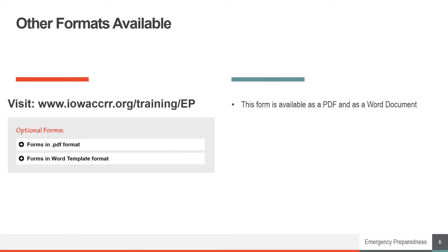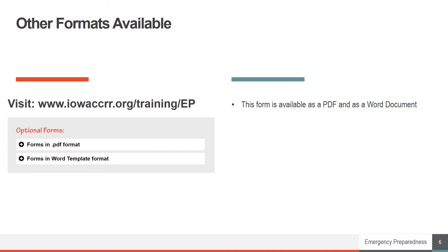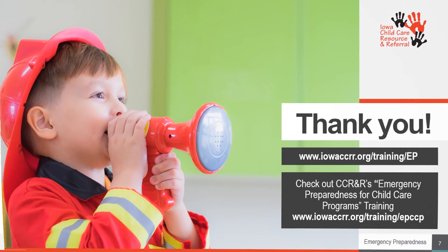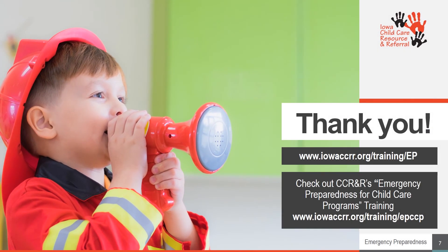This form is available as both a PDF and a Word document. The latter is helpful if you would like to modify the form to capture additional information or ask other questions. If you're looking for instructions on creating your own emergency preparedness plan or filling out other optional forms, check out our main EP training page.